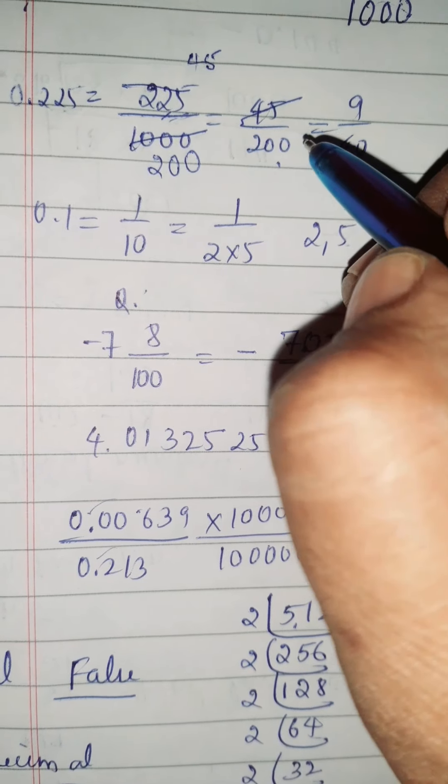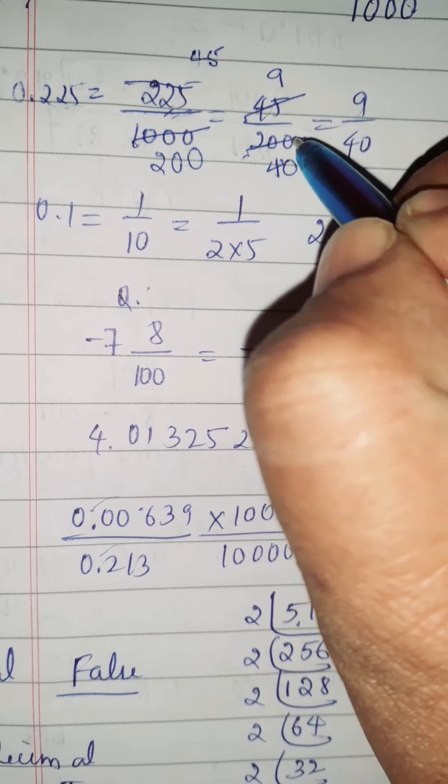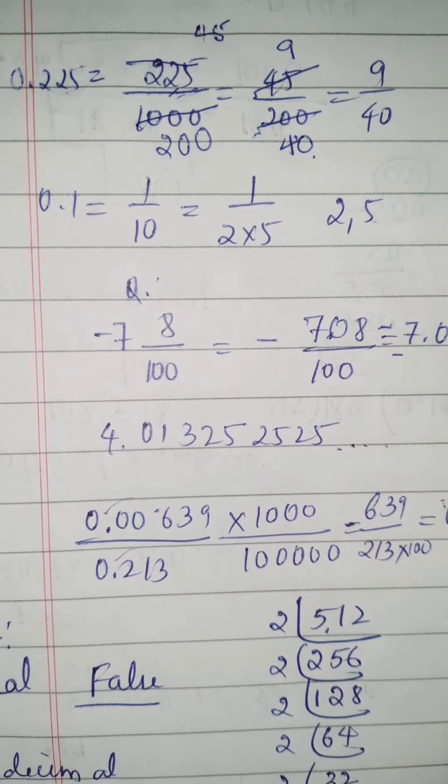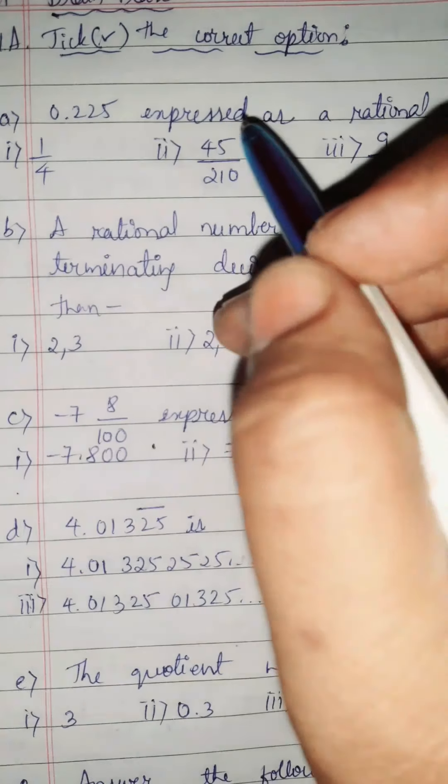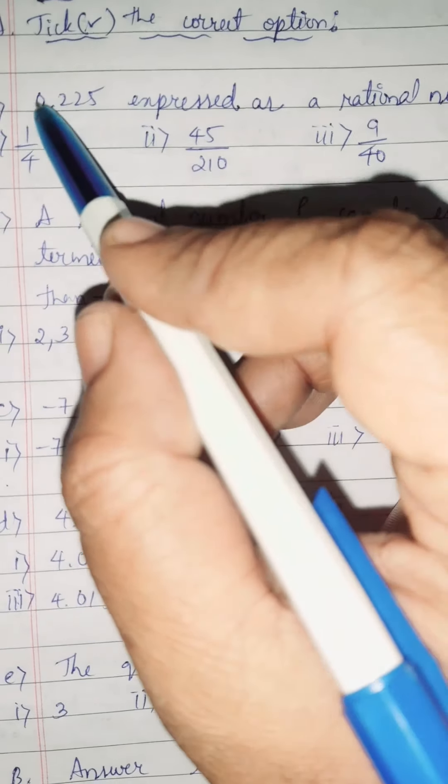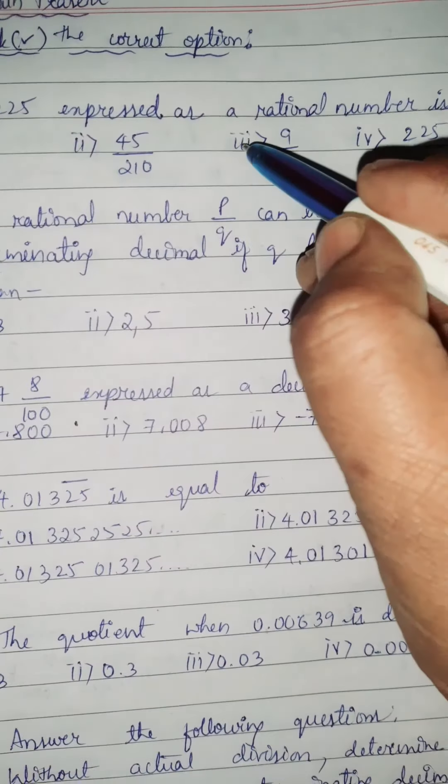45 by 200 which is equal to, again divide by 5 table. 5 times 9 is 45, 5 times 4 is 20, one zero as it is. So the simplest form is 9 by 40. The answer is 9 by 40 children. In these type of questions, we have to solve and then find the correct answer.